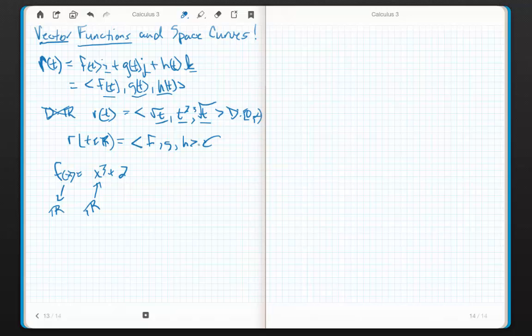Well, in the case of r of t, real number goes in, let's go r of t. This is going to be a real number. And then what gets spat out is going to be f, g, and h. That's a vector valued function or just a vector function. Now, we've already played with these. We know how they work. We're not afraid of them at all.